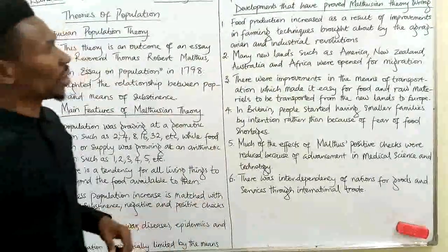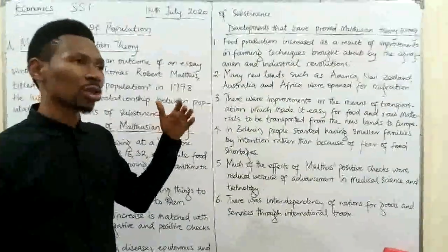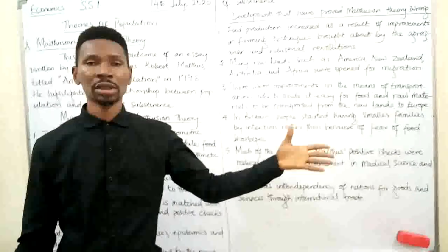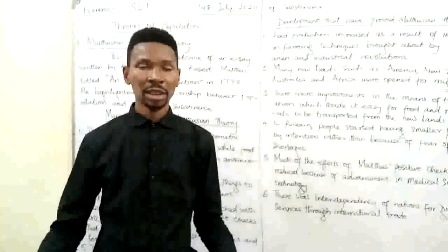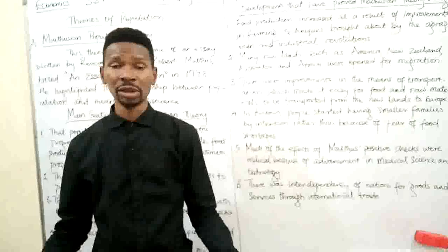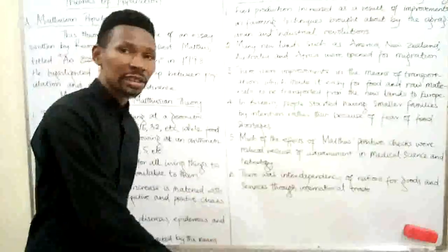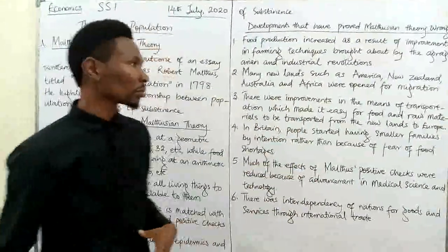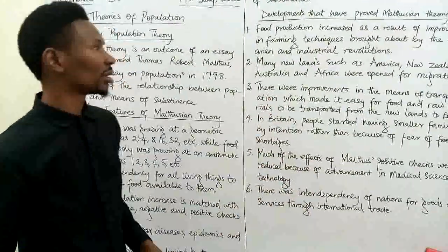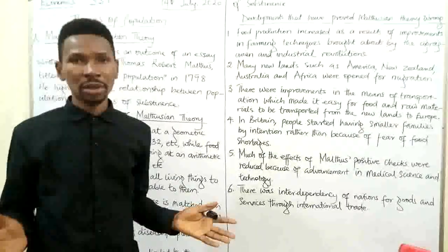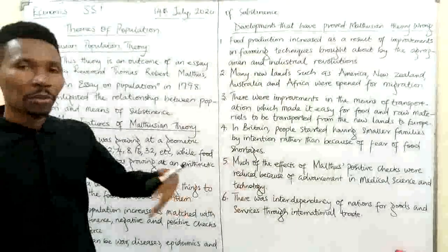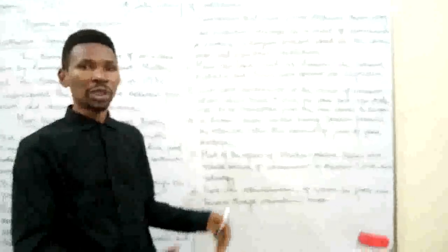Number two, there was also a time where many new lands, such as America — which was not originally owned by the Americans of today but was a land occupied by the Red Indians until the British conquered that land, developed it, and exploited the resources on that land to cater for their needs at home in Europe. The discovery of these lands, such as America, Africa, Australia, opened possibilities for intercontinental migration, which enabled people in higher population areas to come to places of lower population to get some form of self-sustenance.